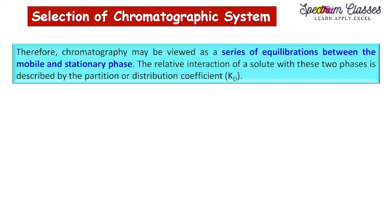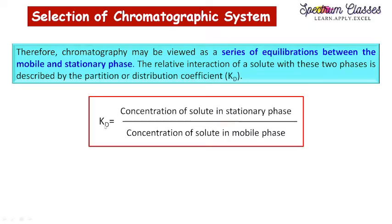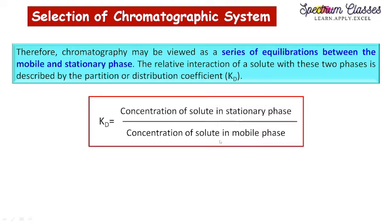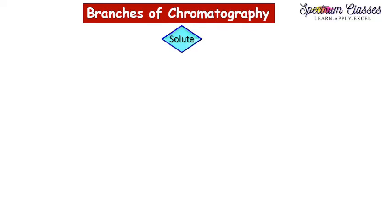Therefore, chromatography may be viewed as a series of equilibria between the mobile and stationary phases. The relative interaction of a solute within these two phases is described by the partition or distribution coefficient, which equals the concentration of solute in the stationary phase divided by the concentration of solute in the mobile phase. For selection of a chromatographic system, it is important to know the physical characteristics of the solute, as this helps interpret the separation method.